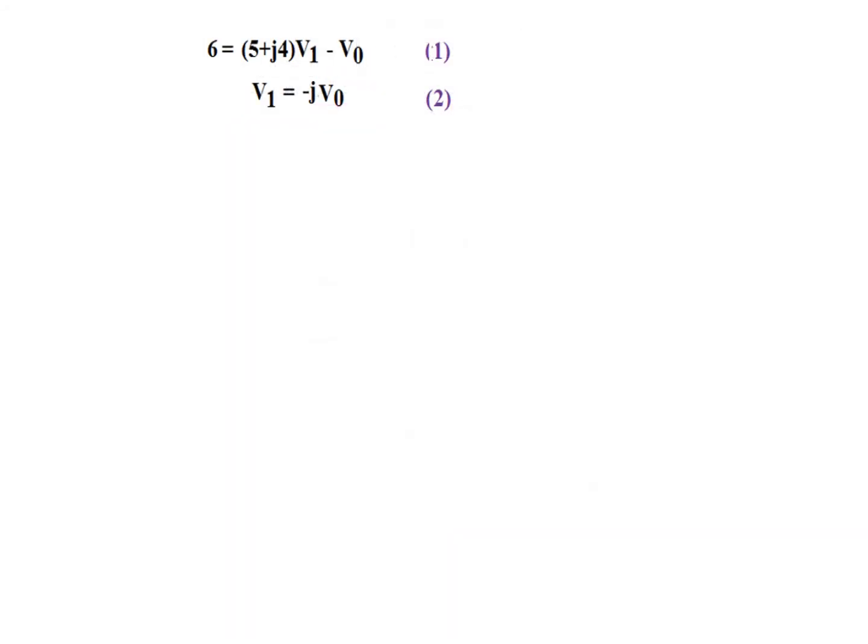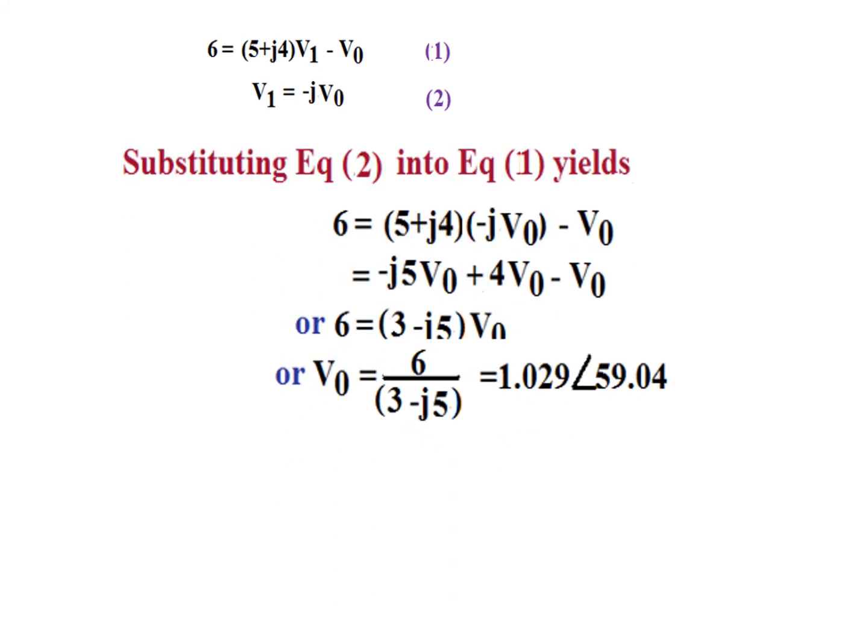From these two equations, we are keen to find V out. Therefore, we will substitute V1 here and we will solve. By substituting equation 2 into equation 1 and solving, we find V0 to be 6 over 3 minus J5 which in polar form will become 1.029 angle 59.04. And in time domain, this will become 1.029 cos omega t plus 59.04 volt. This is the first example.